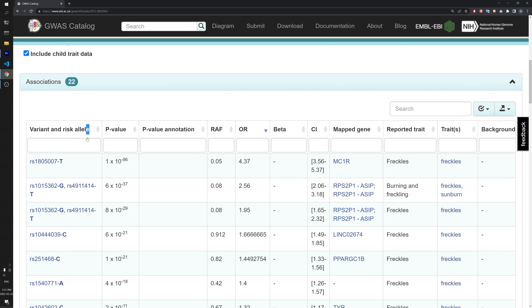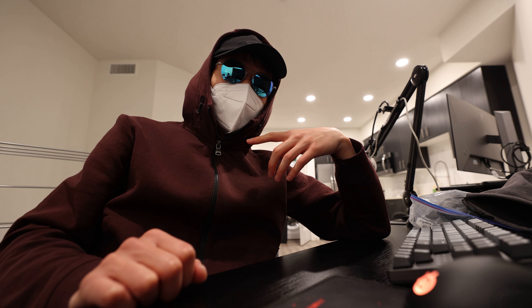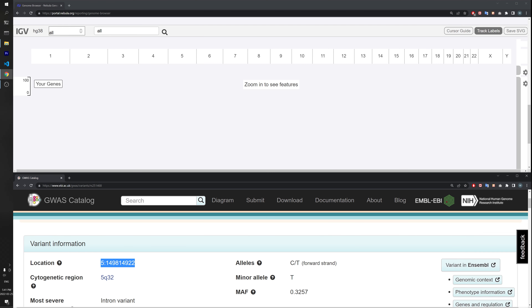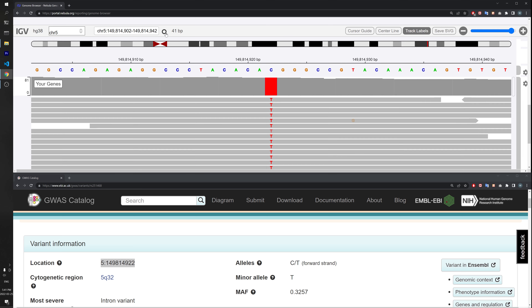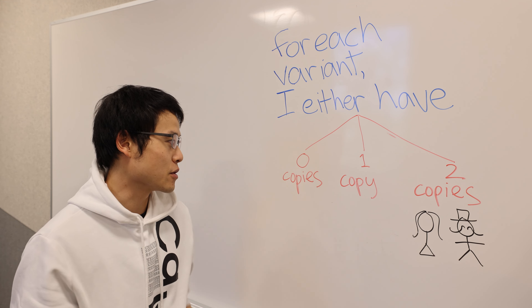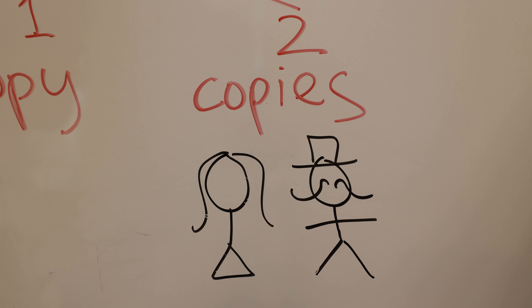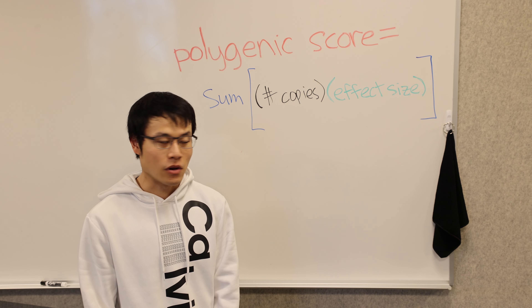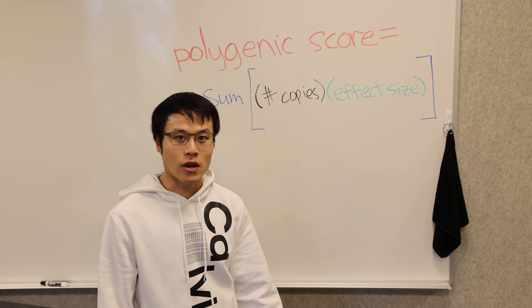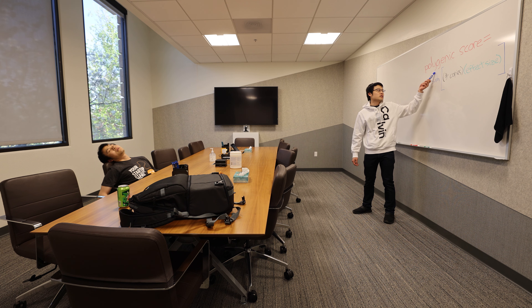These are the variants they found related to freckling. The real question is if I have those freckling variants in my DNA, and I'm pretty sure I do. I can load my DNA into a genome browser and search for these freckling variants. There are only three possible situations: either I don't have the variant, I have one copy, or I have two copies — one from my mom and one from my dad. For each variant, multiply the number of copies I have by the effect size, which tells us how correlated the variant is with the condition. Sum all these up, and we get a huge simplification called the polygenic score.